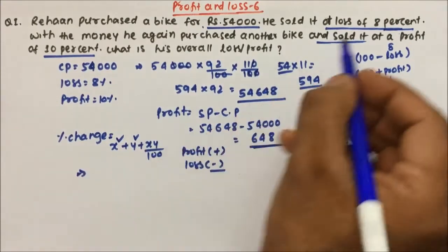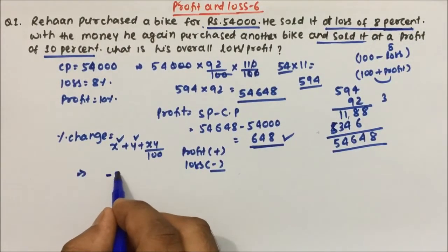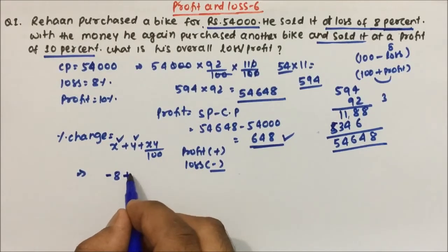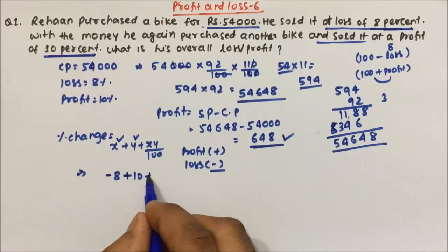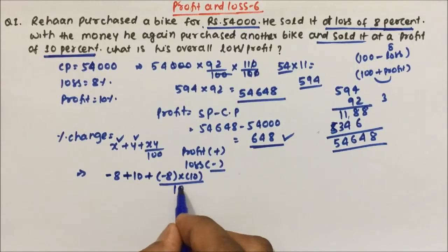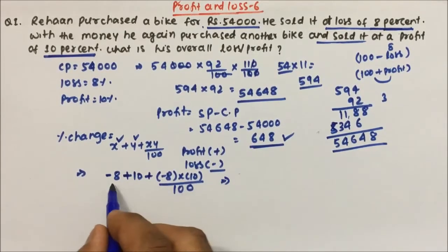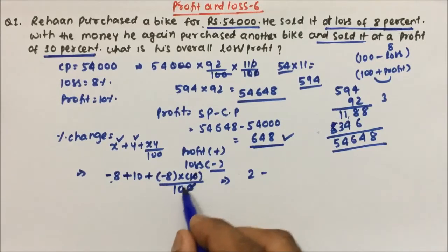So how do we use it? See, the first time it is 8% loss. So 8% loss means minus 8 plus y. So 10% profit, so plus 10. Then again minus of 8 because x is loss into 10 and divide by 100. Now minus 8 plus 10 will give you 2, and this 0 and 0 cancel.